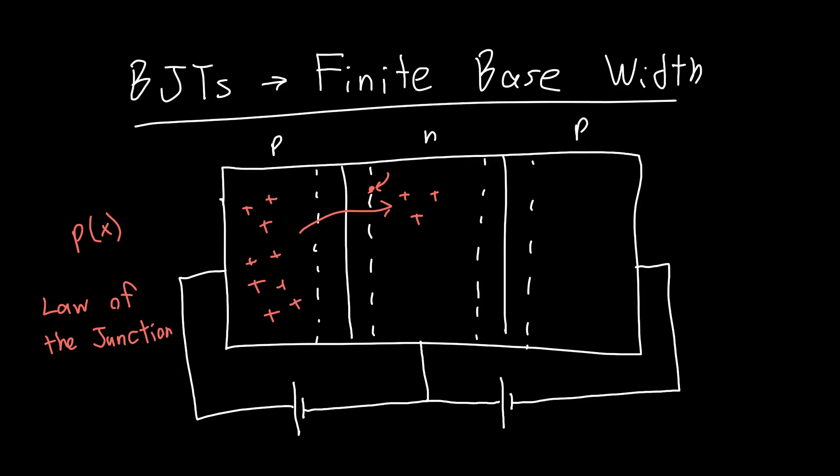So if we know this voltage, which we called VEB, because it's the voltage between the emitter and the base. If we know this voltage, then we can use the law of the junction to find this concentration, the hole concentration right outside the depletion region. And on this side, we could also find the hole concentration. And let's call this P at XB, because let's say this has some finite width now, XB.